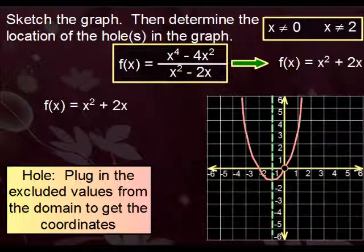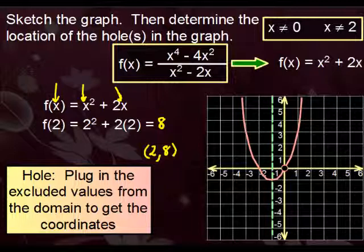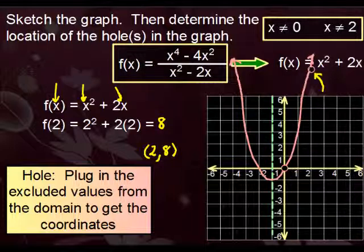If we plug in two for x, we'll get the other point. That would give us eight. Therefore, two comma eight is the location of the other hole in the graph. That would put us up here somewhere. So that would complete the graph.